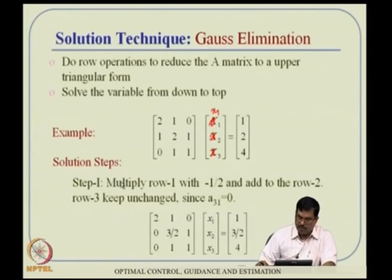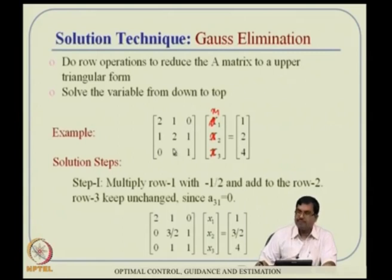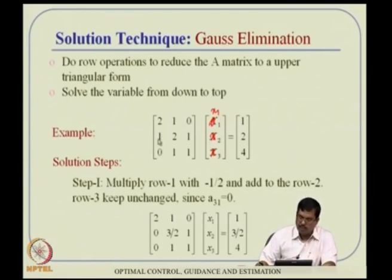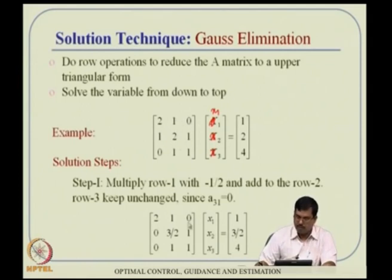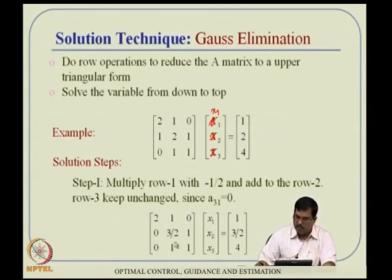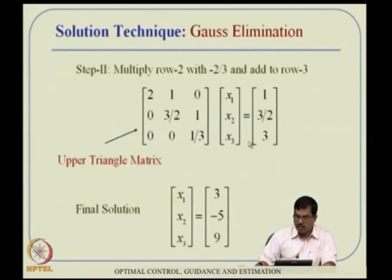For example, we multiply the first row by -1/2 and add it to the second row to make the (2,1) element zero. This gives us 2 - 1/2 = 3/2 for that position. We continue eliminating to get an upper triangular matrix, then we solve from bottom to top: the last equation gives x3 = 9 directly.